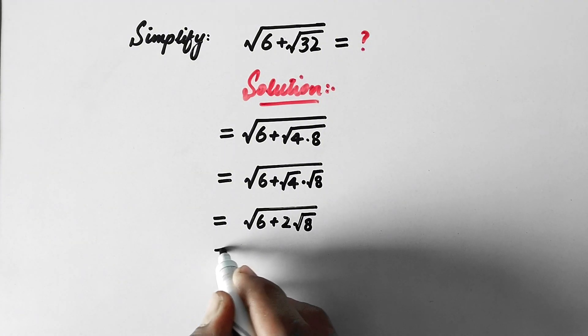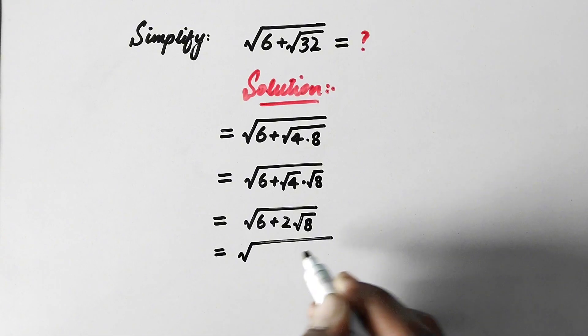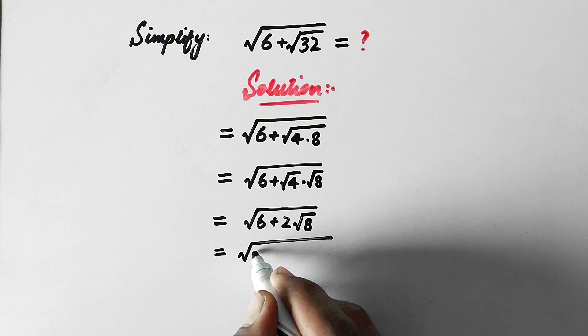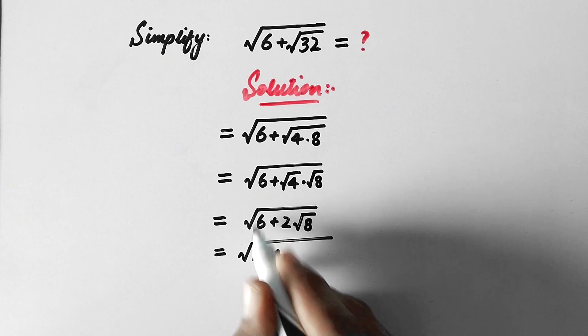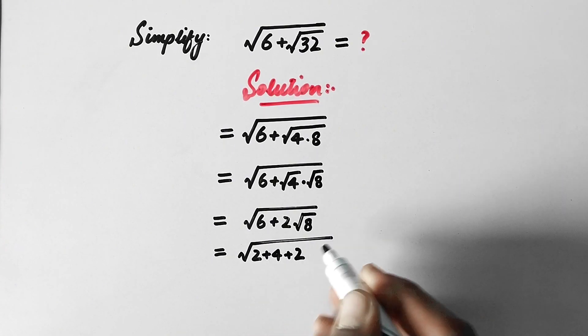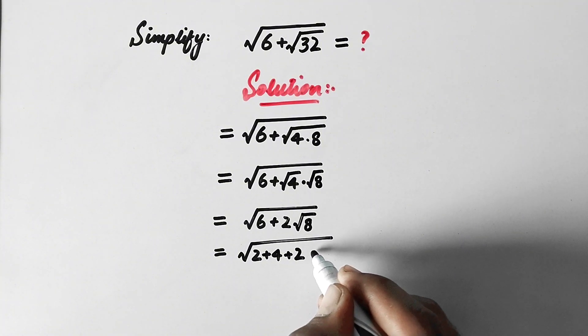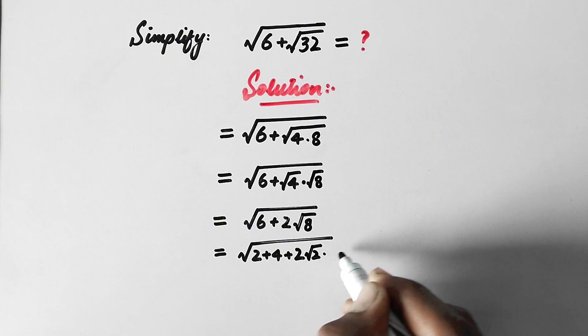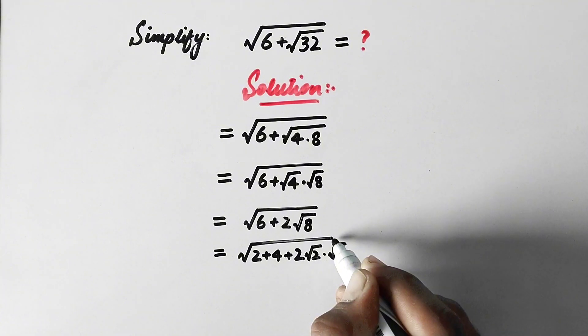Next, this 6 can be expanded as 2 + 4. This is same as 6, plus 2 times √8 can be expanded in this way: √2 times √4.